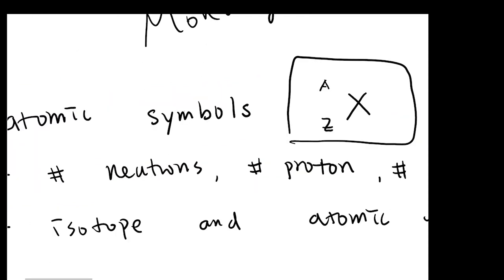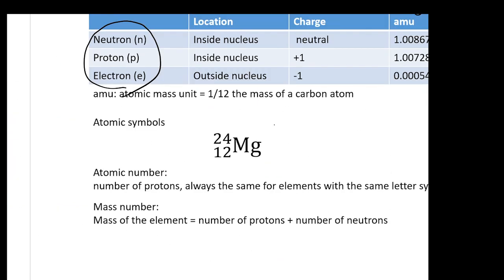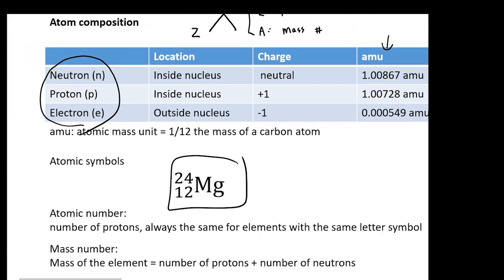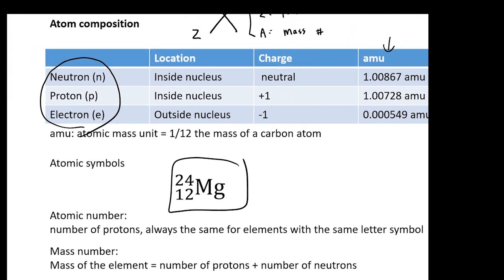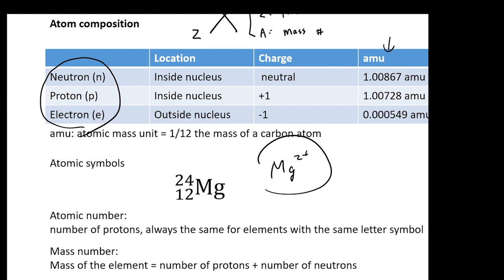For atoms, most of the time, if you don't see a charge written on the atomic symbol, it will be neutral. When you say neutral, that means you're going to have the same amount of protons and electrons. For example, if you don't see something like Mg2+, and there's nothing written there, the atom you are looking at is neutral — it has the same amount of electrons and protons.